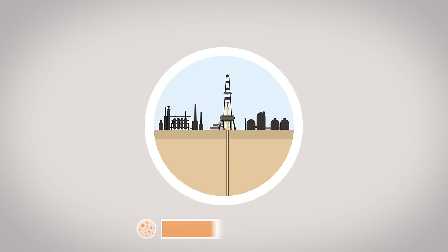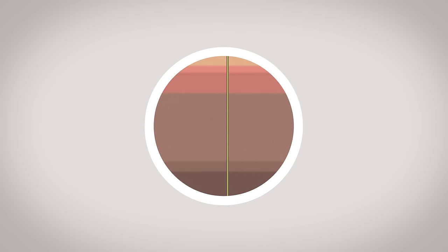Next, the majority of the fracking fluid is pumped out again. And now, the natural gas can be recovered. As soon as the gas source is exhausted, the drill hole is sealed. As a rule, the fracking fluid is pumped back into deep underground layers and sealed in there.